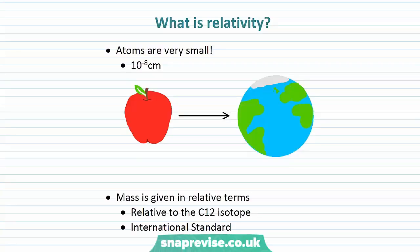So what is relativity? Well, atoms are very small — about 10 to the minus 8 centimetres big. If every atom in an apple was the size of an apple, the apple itself would be the size of the earth. Mass is therefore given in relative terms so we don't have to work with such small numbers. It's given relative to the carbon-12 isotope, which is an international standard.